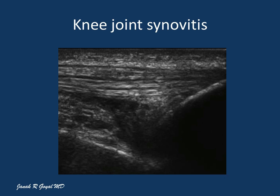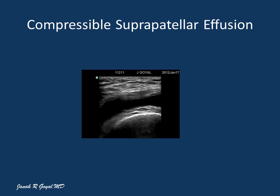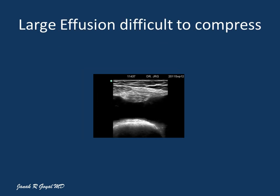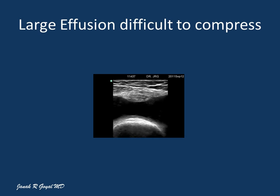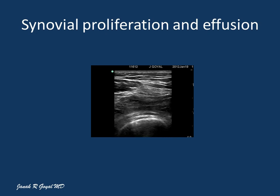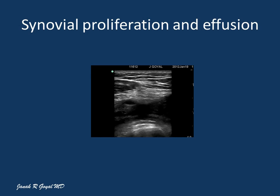Here is a patient with hypoechoic non-compressible thickening of the synovial membrane indicative of knee synovitis and synovial proliferation. Compression with the probe helps differentiate synovial effusion from synovial proliferation. Synovial effusions are compressible with the probe. A word of caution: large effusions may not be completely compressible because of the large volume. Also, a patient may have a combination of both synovial proliferation and synovial effusion, making it only partly compressible.